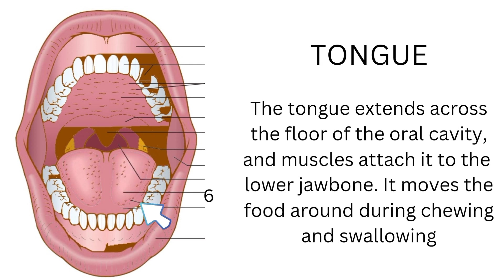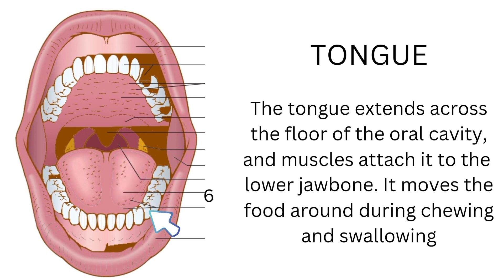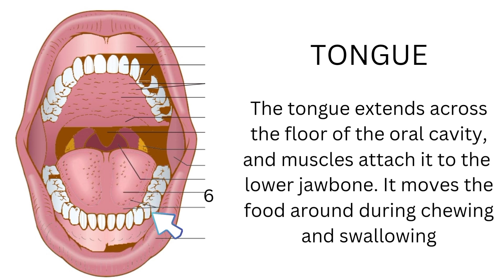The tongue extends across the floor of the oral cavity and muscles attach it to the lower jaw bone. It moves the food around during chewing and swallowing.